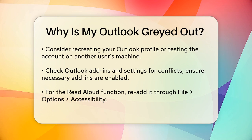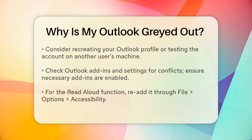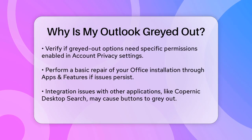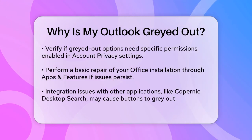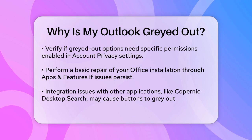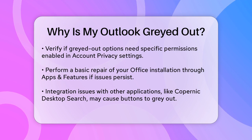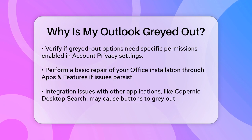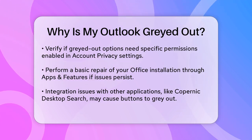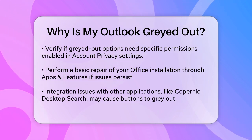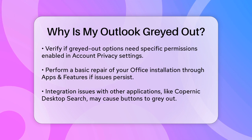Additionally, check if any of the grayed-out options require specific permissions or settings to be enabled. For instance, features like Account Privacy need to be turned on via File > Office Account > Account Privacy > Manage Settings. Turn on Optional Connected Experiences for them to work properly.